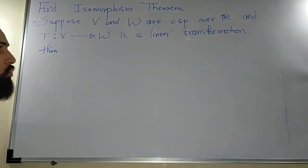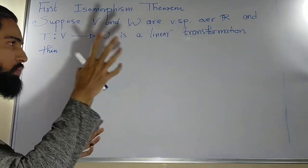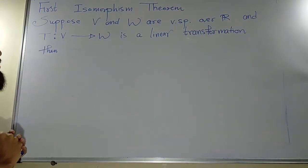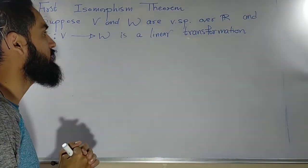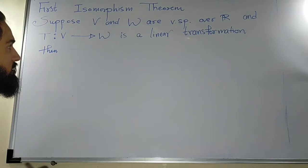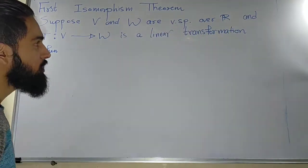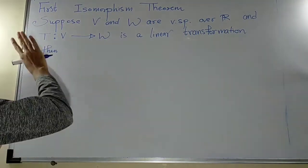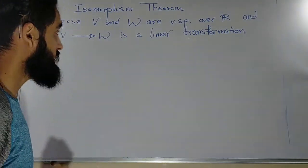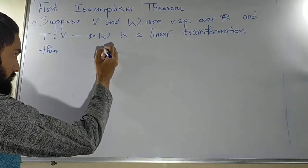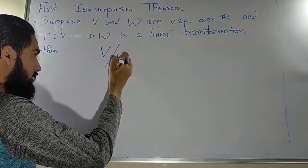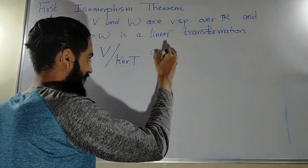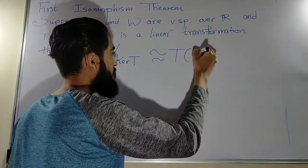Suppose my V and W are vector spaces over ℝ — it could be over any field, but for now over ℝ — and my T from V to W is a linear transformation, any random linear transformation from one vector space to another vector space W. Both are vector spaces over the same field ℝ, meaning the real numbers. Then the First Isomorphism Theorem states that V modulo kernel of T is isomorphic to T(V).